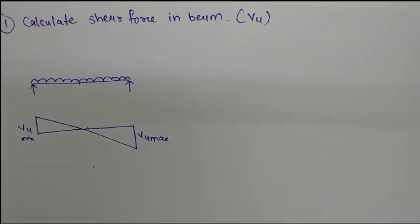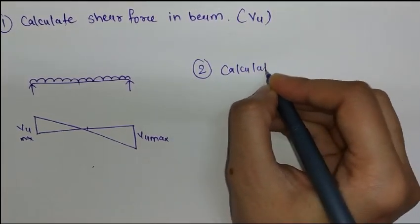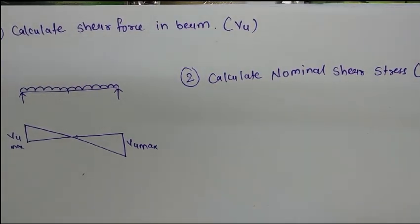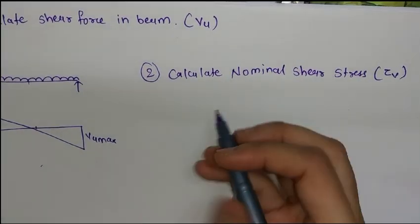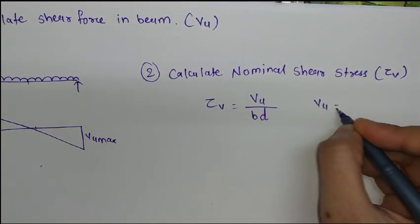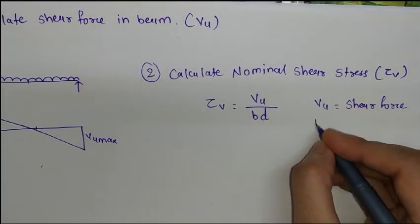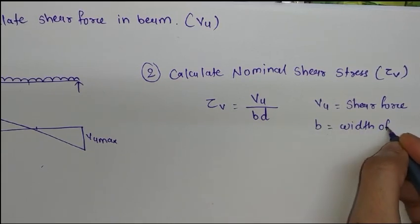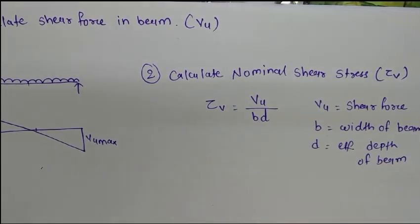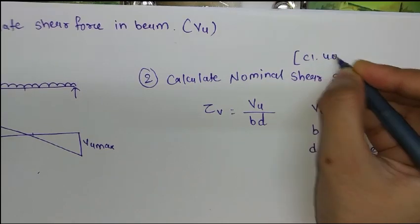Step number two is to calculate nominal shear stress, denoted as τv. The formula for τv is VU upon BD, where VU is the maximum shear force in the beam, B is the width of the beam, and D is the effective depth of the beam. You can find this formula in clause 40.4 of IS 456:2000.